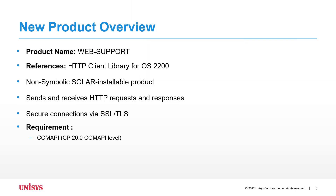Web support is a new product added to OS 2200 ClearPath release 20.0. It is a non-symbolic product you install using Solar. Web support is an HTTP-based client library that sends and receives HTTP requests and responses. Web support uses COM API procedures for HTTP calls, and therefore you must have COM API available to use this library. You can use SSL or TLS to secure underlying connections. Default communication is non-secure.